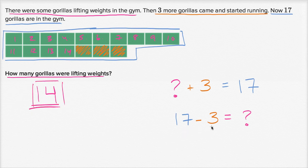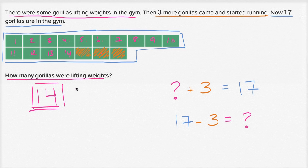17 minus three — you could view it this way: 17 is one 10 and seven ones. So you take away three ones. Seven minus three is four. So 17 minus three is going to be 14.